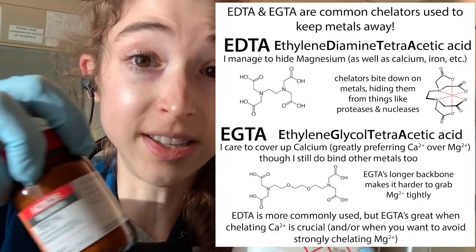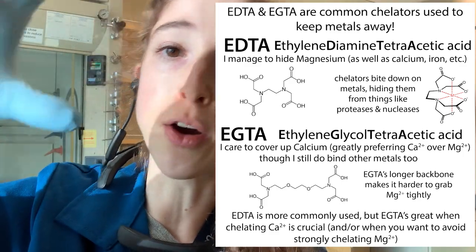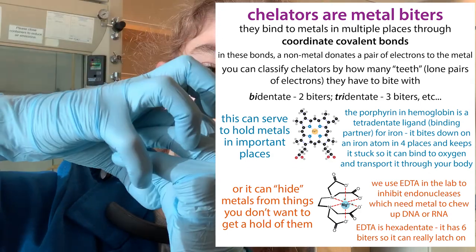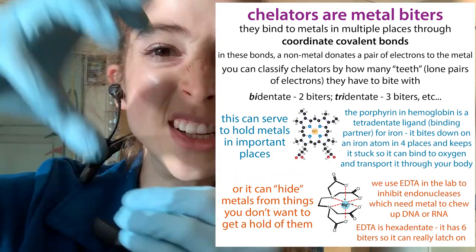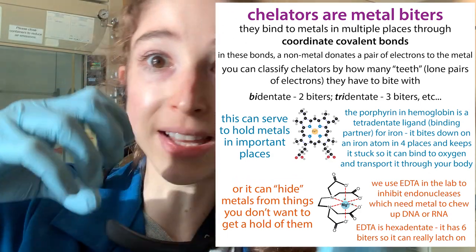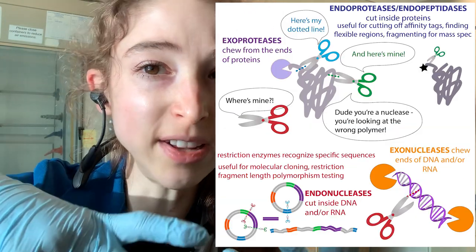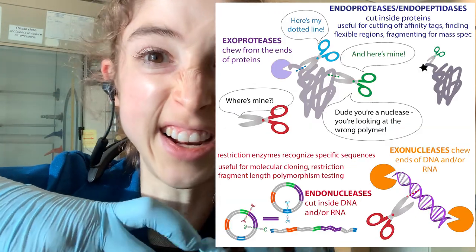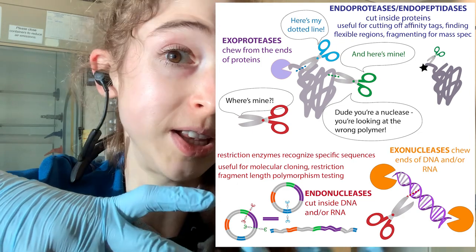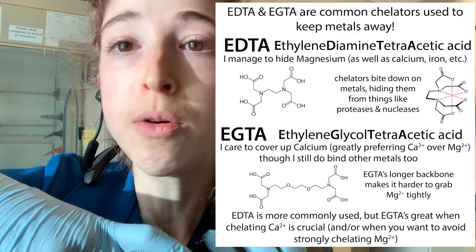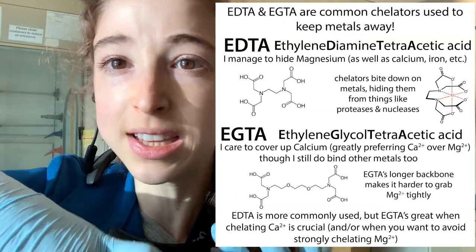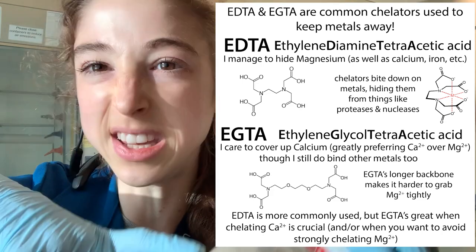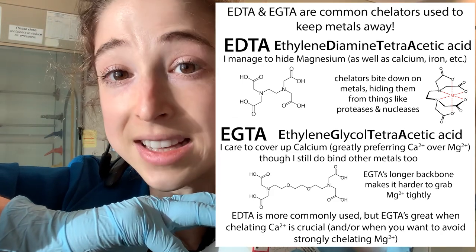Long story short, these are both chelators, which means that they are metal biters. They can bite down on metals. Chelate means claw. So they have these claws, they bite down on these metals, and they hide them from things like proteases — protein chewers — and nucleases, like DNA and RNA chewers. This is why they're really useful in the lab when we want to protect the proteins and the DNA that we're working with. They also have medical implications, being used to treat lead poisoning and things like that.